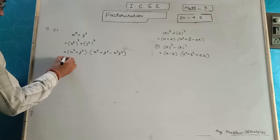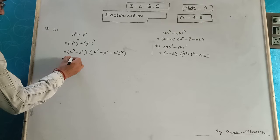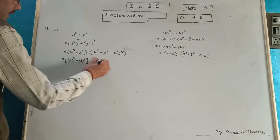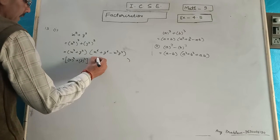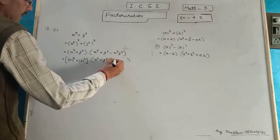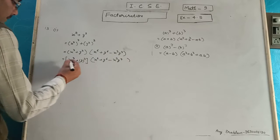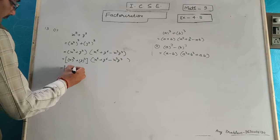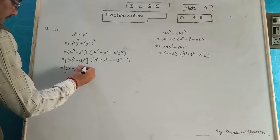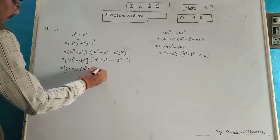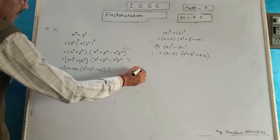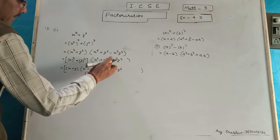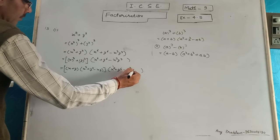We will also write in identity form. 1st bracket: x cube, 2nd bracket: y cube. As an identity, 1st bracket is x plus y, 2nd bracket is x square plus y square minus xy, and last bracket is the same: y⁶ minus x cube into y cube.